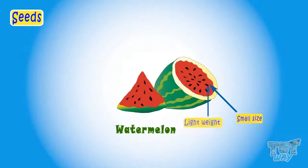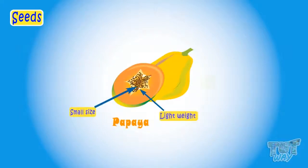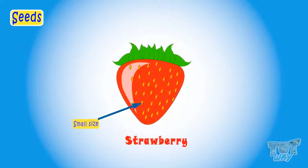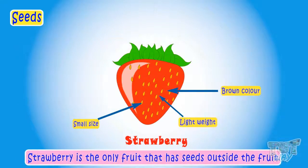Watermelon has small, light, and black seeds, so many seeds. Papaya has small, light, and black seeds. Strawberry has small, light, and brown seeds. Remember, it's the only fruit which has seeds outside it.